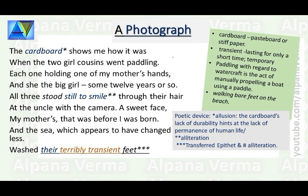The poet says 'the cardboard shows me how it was.' What is the cardboard? Cardboard is a pasteboard or stiff paper on which the photograph was pasted. The cardboard refers to the childhood photograph of her mother. The poetic device here is allusion. The cardboard's lack of durability hints at the lack of permanence of human life.